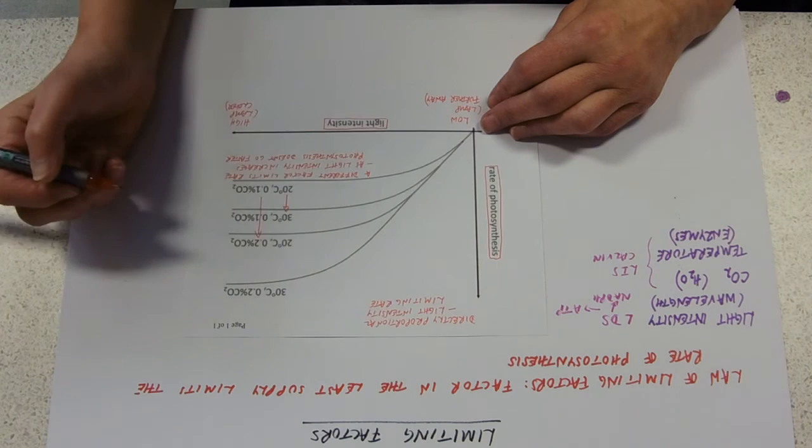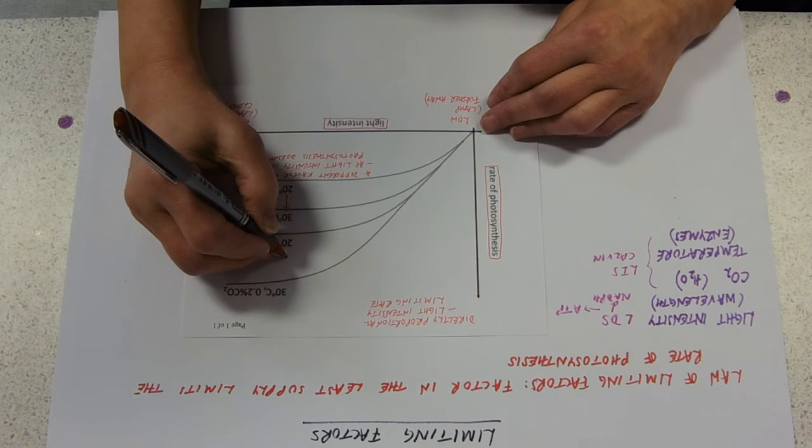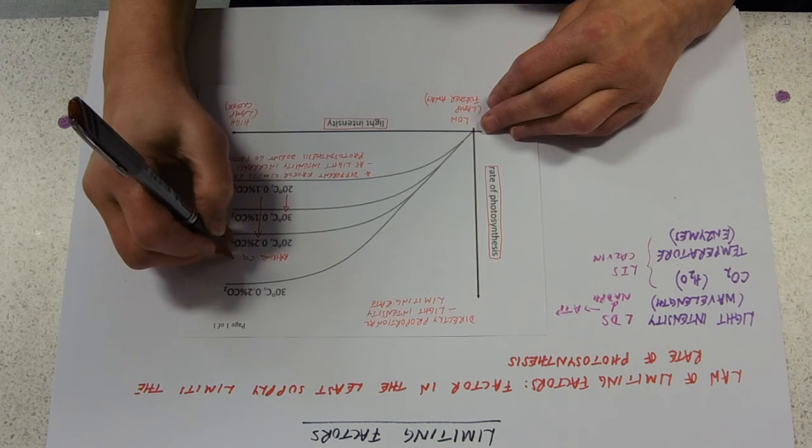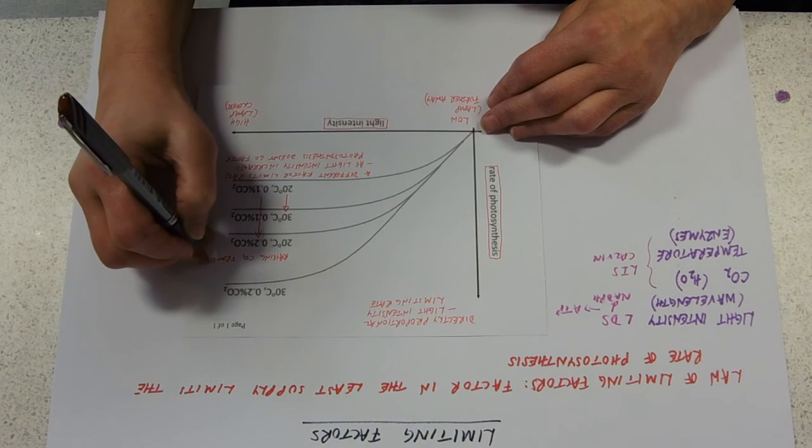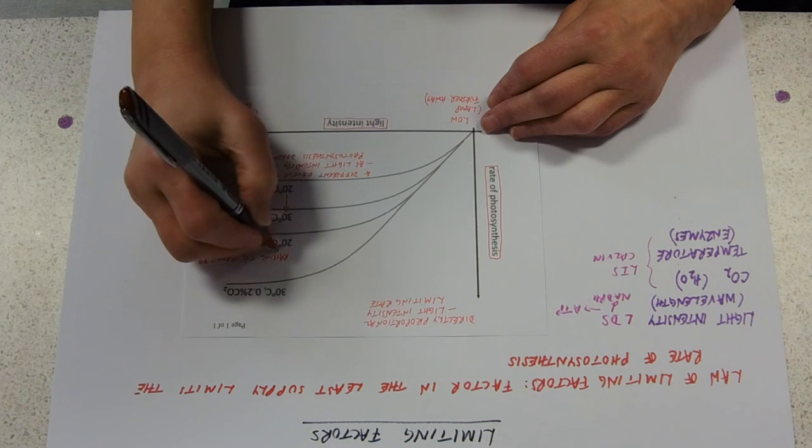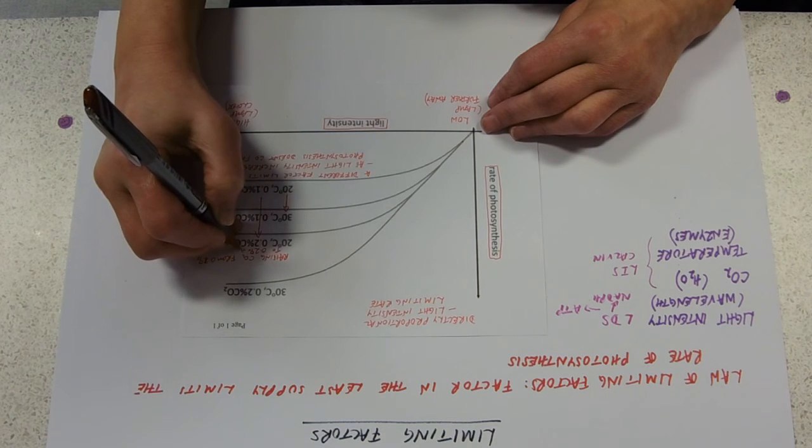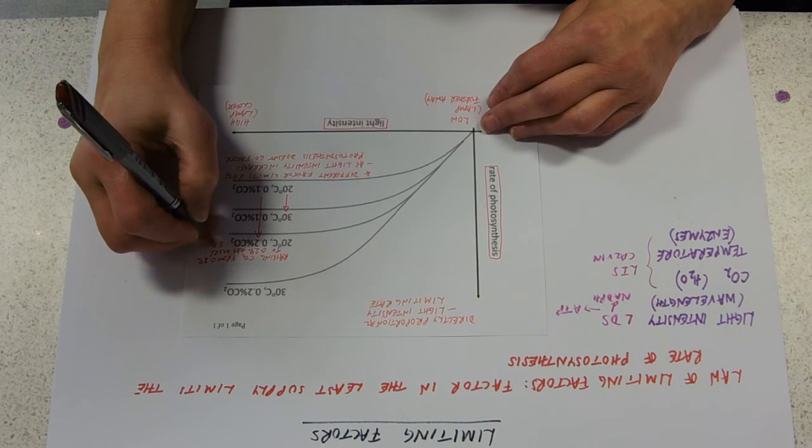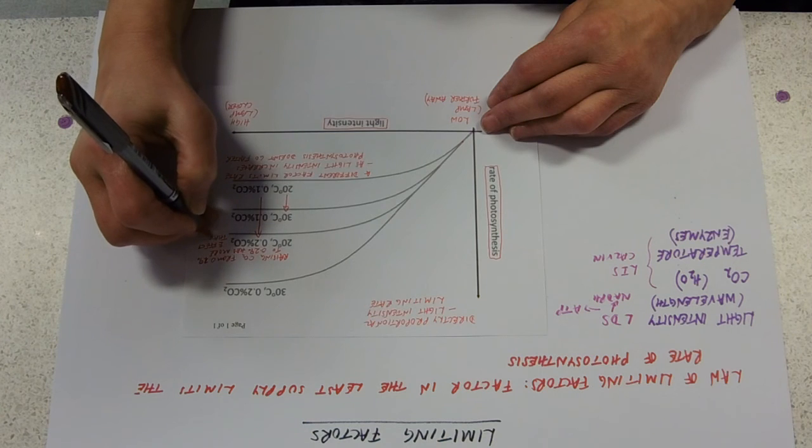We leave the temperature the same but raise the carbon dioxide. So this one tells us that raising carbon dioxide from 0.1% to 0.2% has more effect than raising temperature.